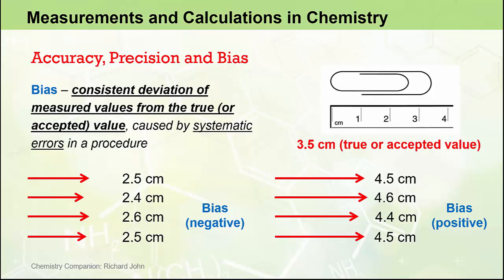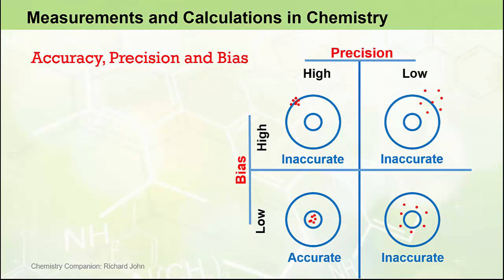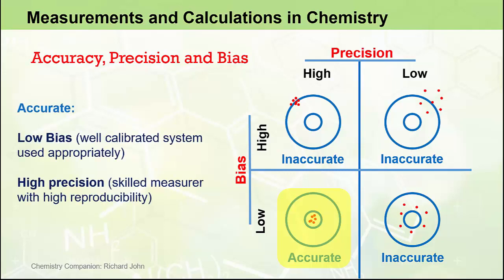In both cases it is likely that some sort of systematic error has been introduced by a poor measuring system — for example, the measuring apparatus could be poorly calibrated or being used incorrectly. These three terms — accuracy, precision, and bias — can be represented by a diagram where we imagine a marksman shooting at a target. Only the bottom left corner gives us the conditions for accuracy, which require low bias and high precision. The bottom left target shows shots grouped very close together, representing high precision. This marksman is likely highly skilled, and all shots hit the bullseye, meaning the gun sights are well calibrated — exactly what we want in a measurement system.